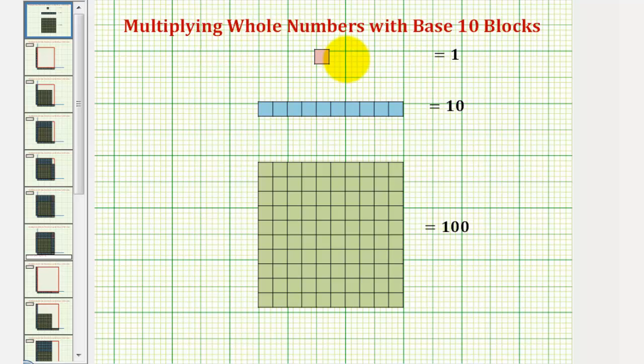Welcome to an example on how to multiply whole numbers using base 10 blocks using area. Let's first define our blocks. Here we have a one block, sometimes called a bit, a 10 block, sometimes called a long, and a 100 block, sometimes called a flat.